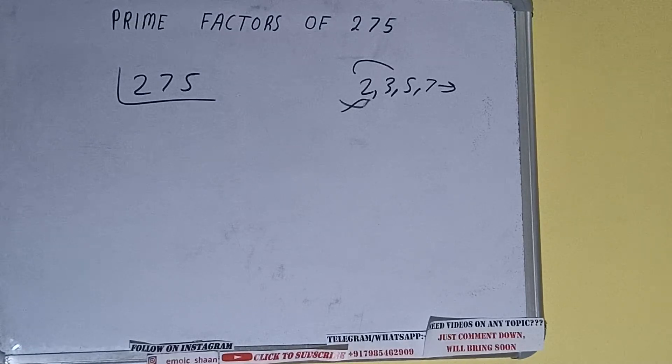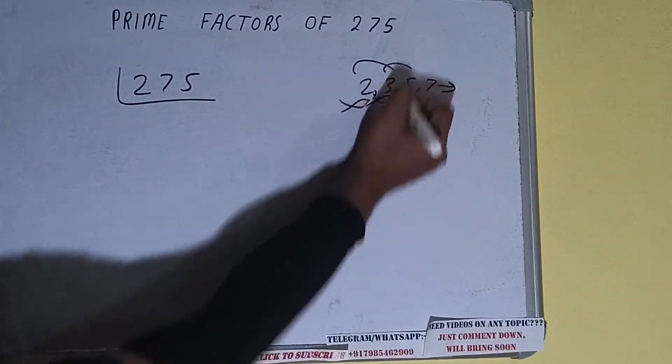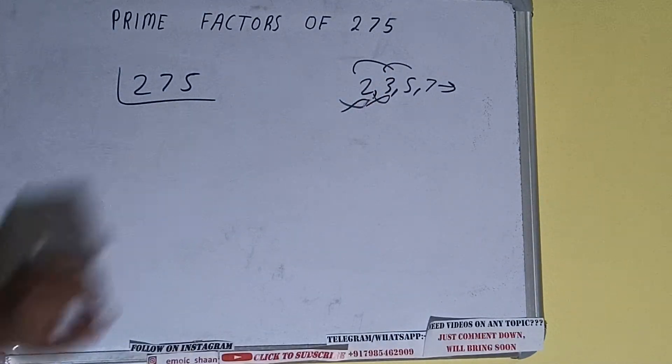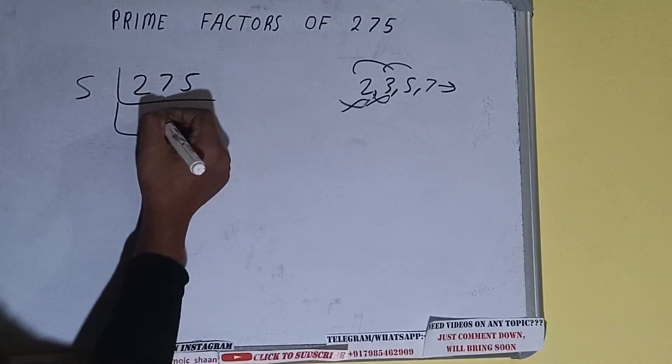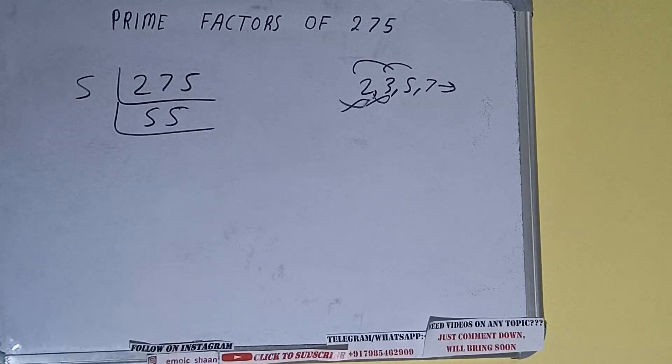Let's check with five. The last digit is five, so it is divisible by five. So divide it, and we'll be having five fives are 25. Five fives are 25. We'll be having 55.